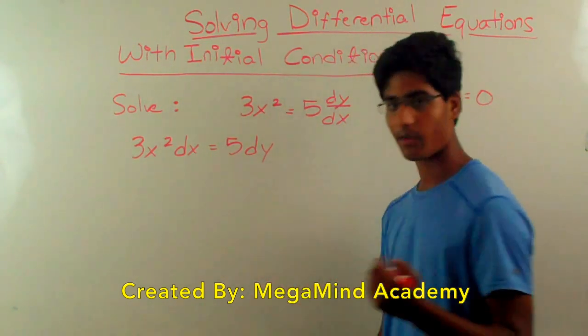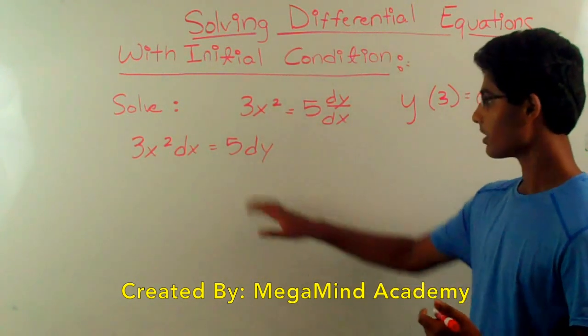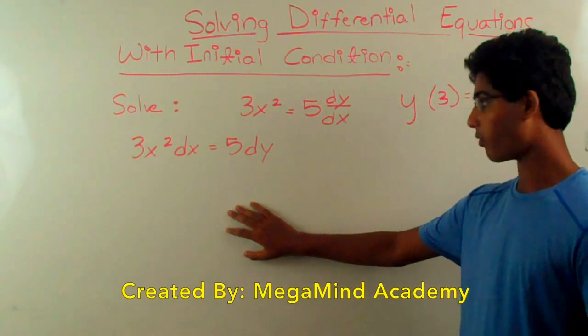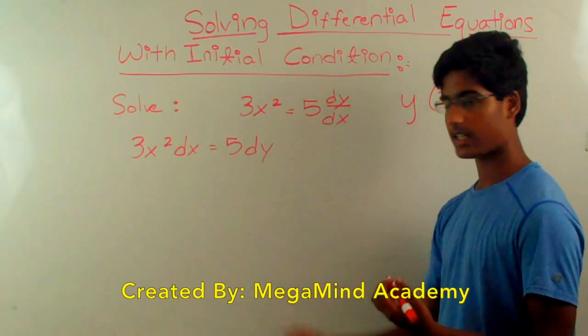Now in this case, even though the function doesn't have a y in it, we can still say that this function is in terms of y. It'll just be in terms of y to the 0 power. So this is the same thing as 5 times y to the 0 power.